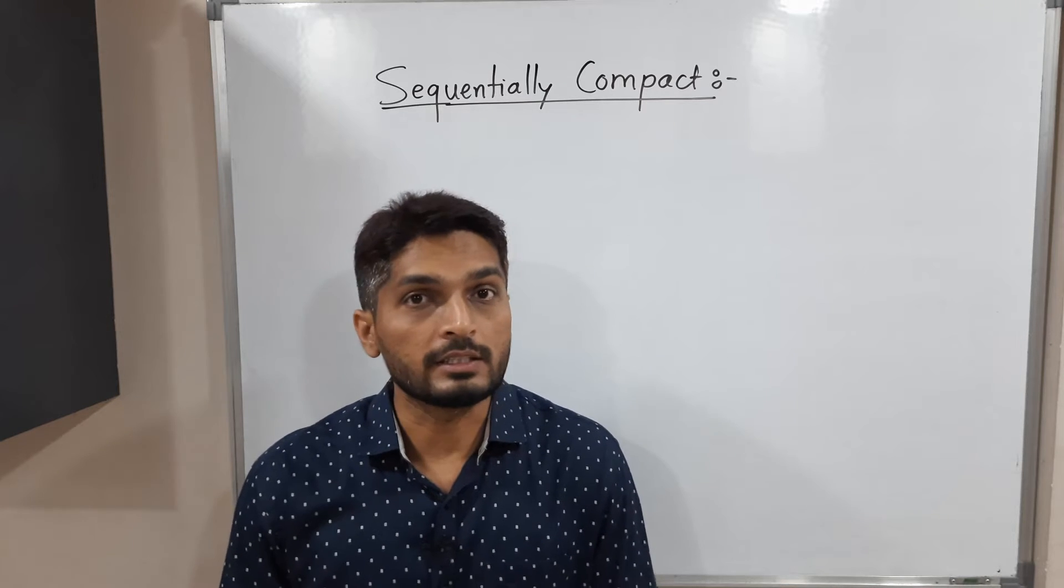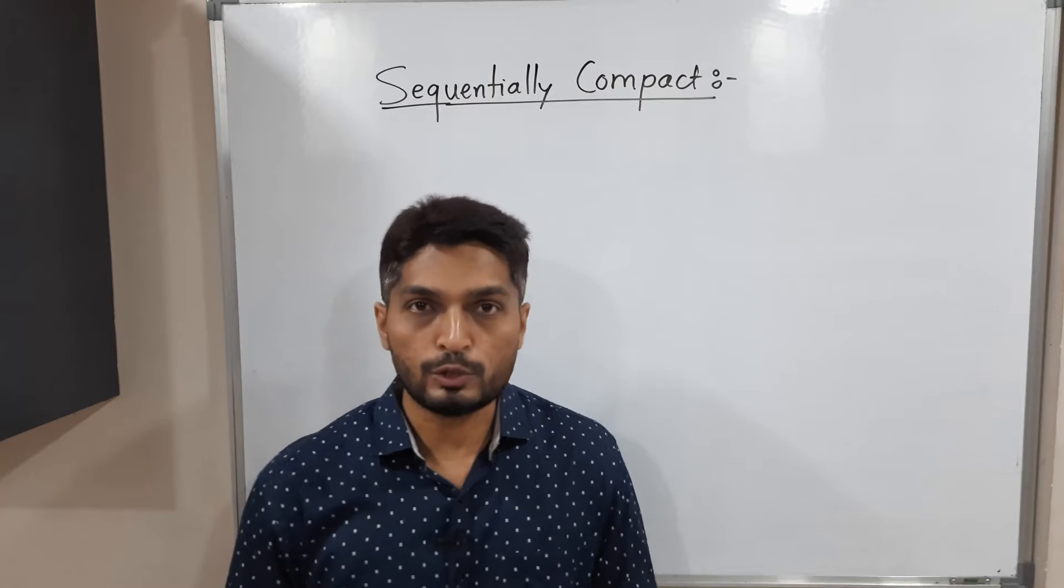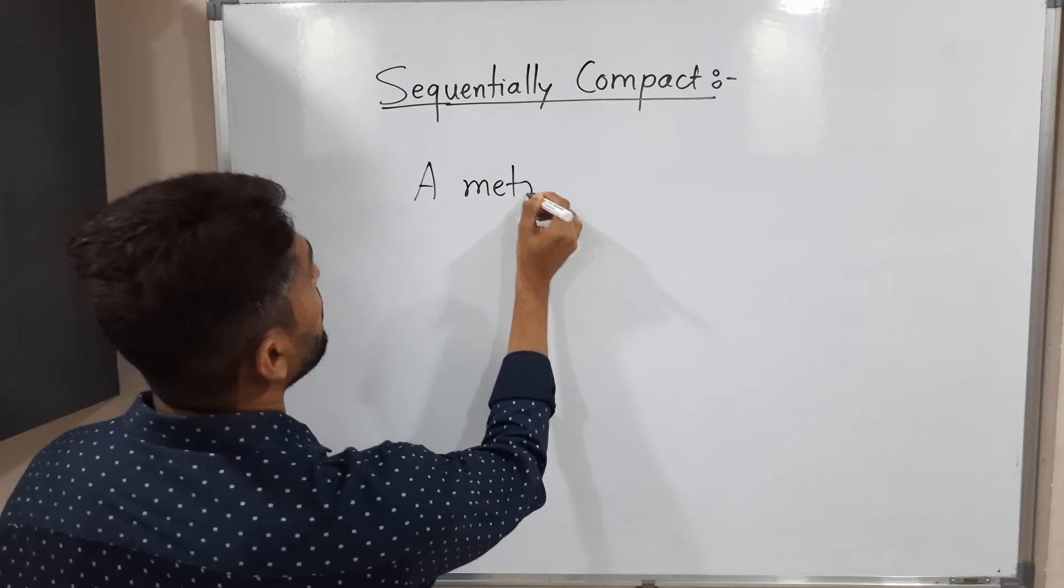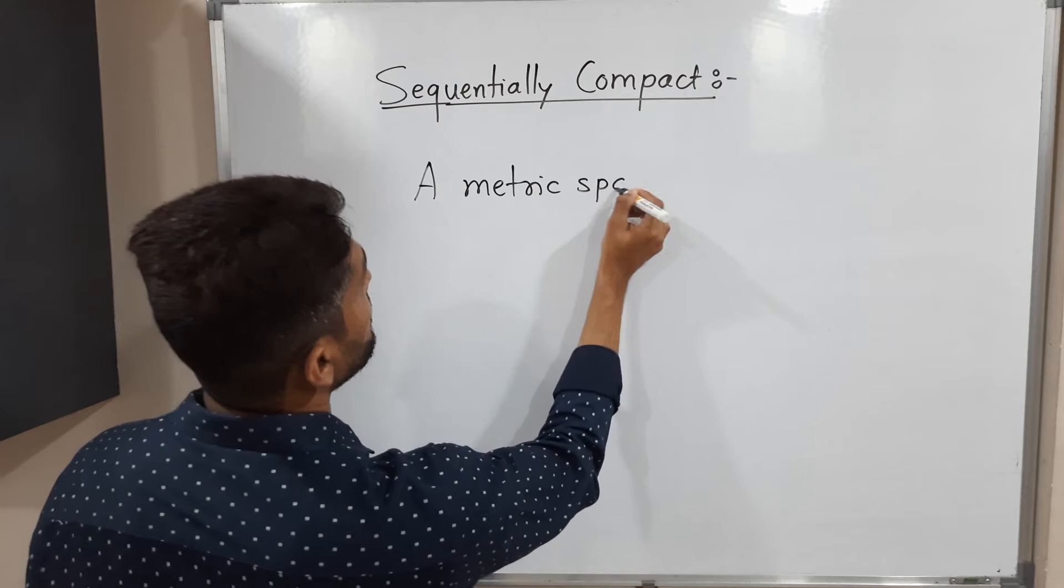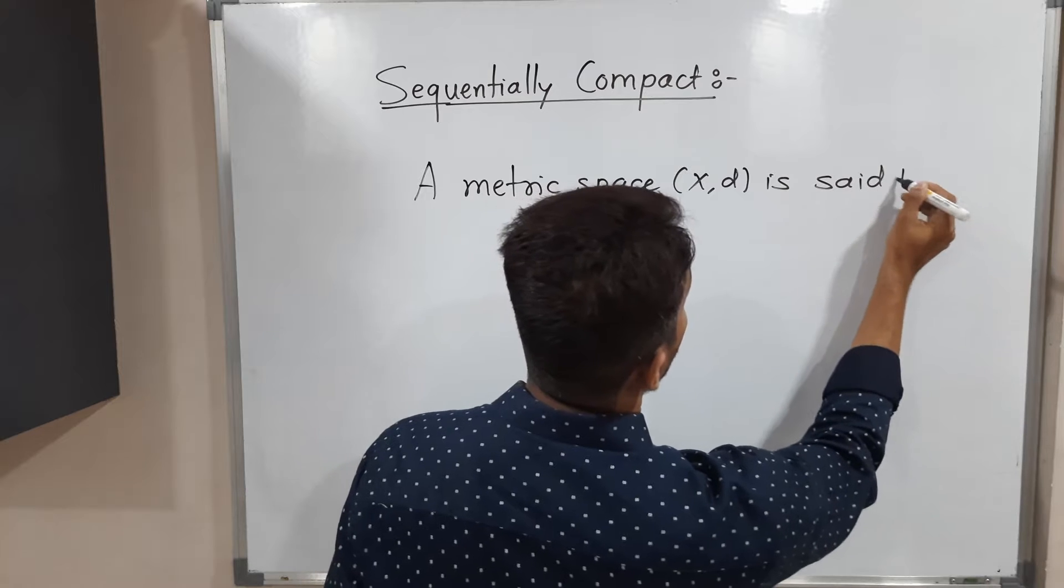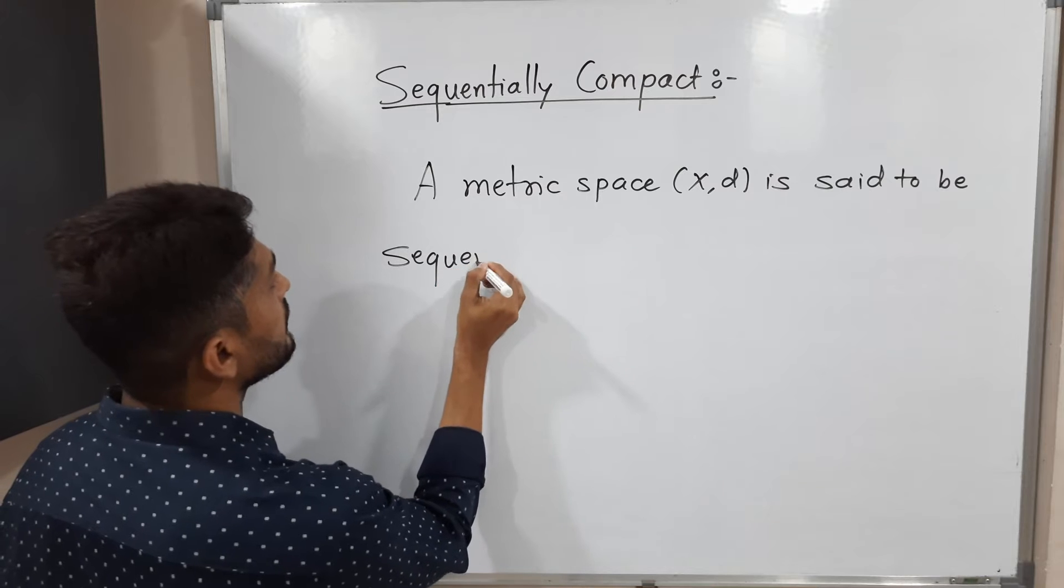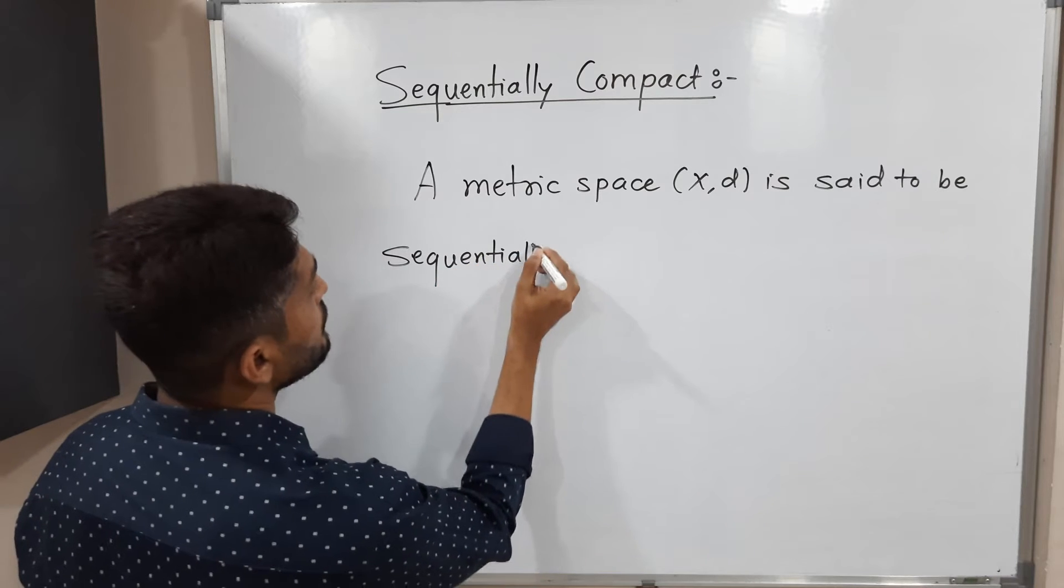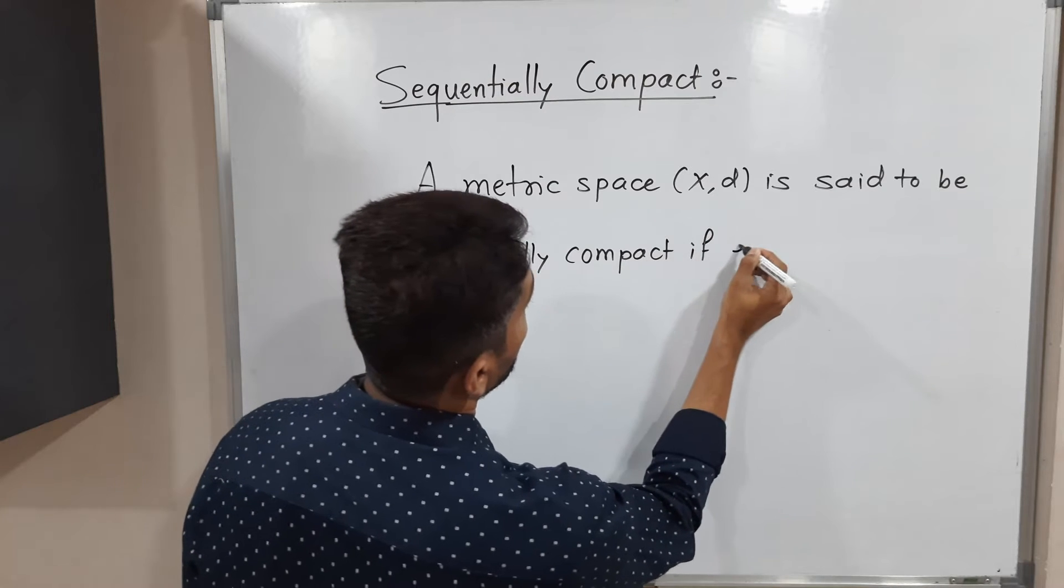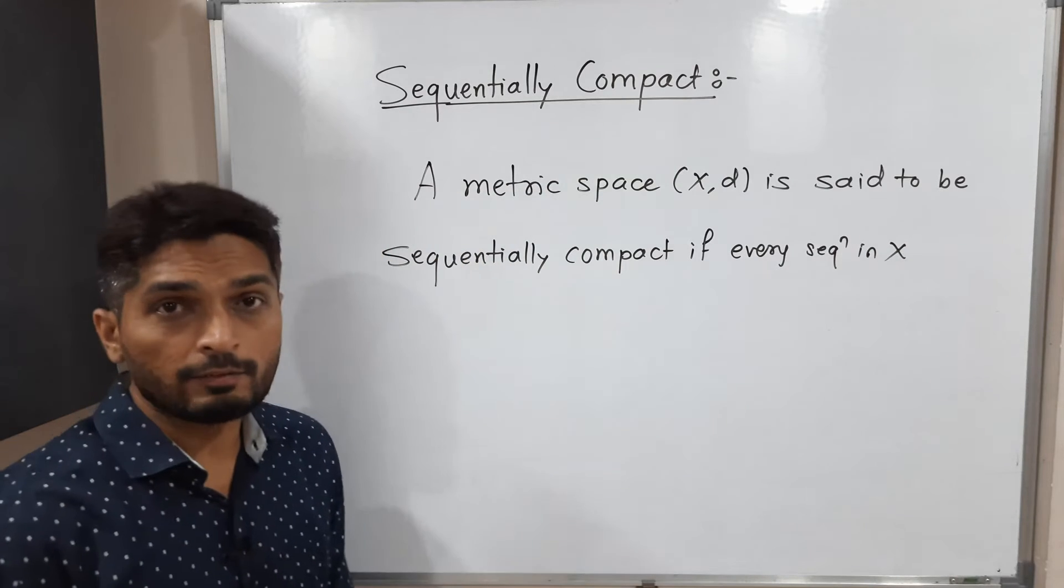A metric space (X,d) is said to be sequentially compact if every sequence has a convergent subsequence. Let me write the definition. A metric space (X,d) is said to be sequentially compact if every sequence in x, if you take any sequence in